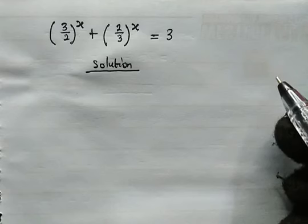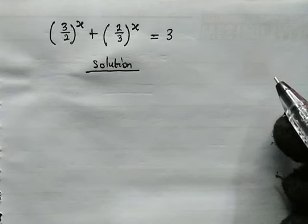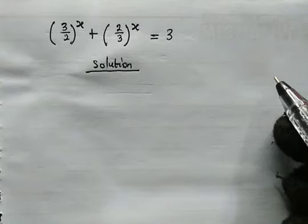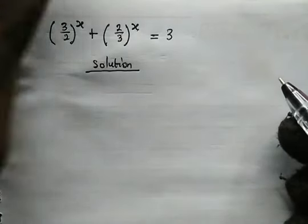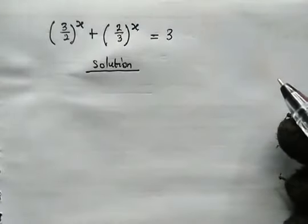We have 3 all over 2 to the power of x, plus 2 all over 3 to the power of x. Then this is equal to 3.